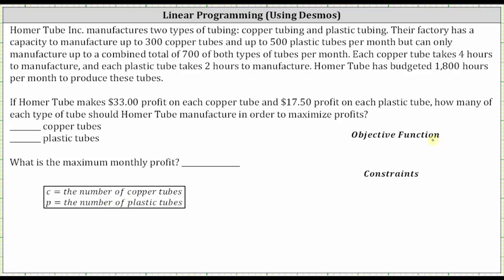Next, let's write the objective function, which is the profit function we want to maximize. Since the company makes $33 profit on each copper tube and $17.50 profit on each plastic tube, the profit P is a function of C and lowercase p: P = 33C + 17.5p.